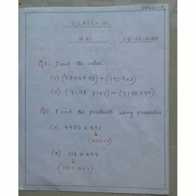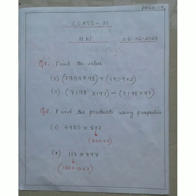I have given some problems as homework. Question 1: Find the value of 7909 × 98 + 7909 × 2. Here 7909 is common — take it as A, 98 as B, and 2 as C, then solve. Question 2: Find the product of 4980 × 507. You can expand 507 as 500 + 7. Question 3: 117 × 897. You can break 117 as 100 + 10 and then proceed.